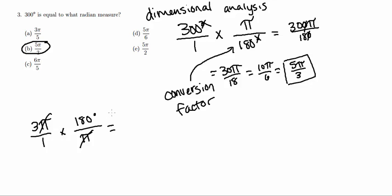So now I'm just going to multiply straight across, and I'm going to get 180 times 3, which is going to be 540. So this is going to be equal to 540 degrees.